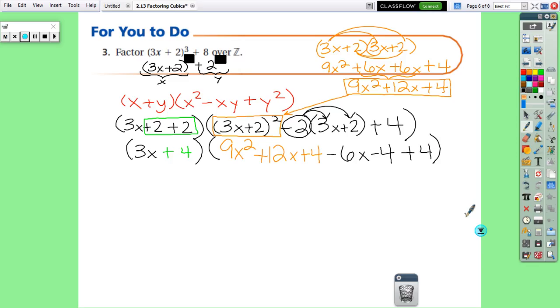So once we have everything simplified, we have this part simplified and we have this part simplified. Now we just have to combine our like terms. So this part right here is already done. We don't have to do anything else with that. That part is going to stay the same. So 3x + 4.